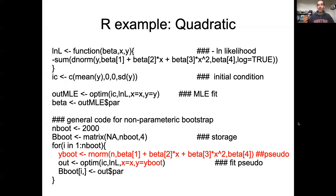I'm going to look at what this looks like in R, and I'm going to focus in red on how the parametric bootstrap differs from the nonparametric bootstrap. At the top, we just have our likelihood function and our maximum likelihood fit. We're saving the parameters that came out of that maximum likelihood fit, and particularly we're pulling out all the betas from there. We're setting up our number of bootstraps and our matrix to store bootstrap samples.